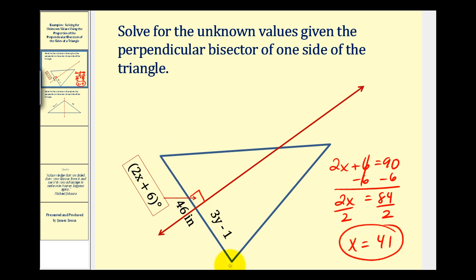Now let's take a look at this side of the triangle. Since this red line is a perpendicular bisector, it cuts this side of the triangle into two congruent segments. So this segment here is congruent to this segment here. So the total length of this segment is 46 inches. That means this segment here must be half that length or 23 inches.